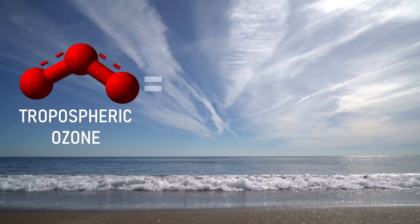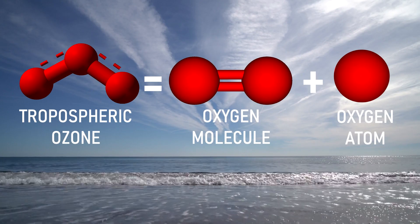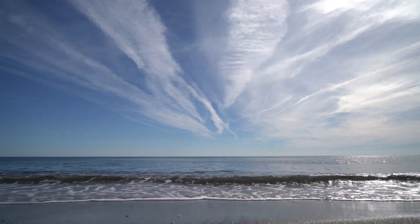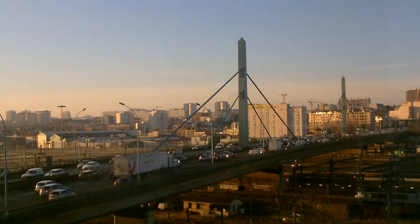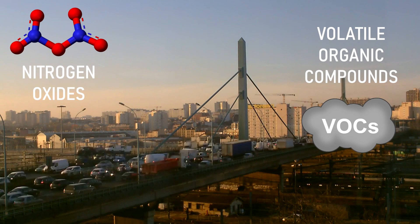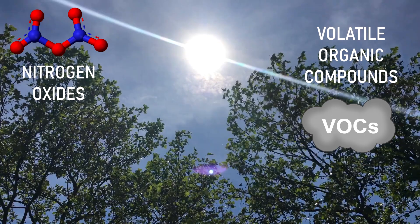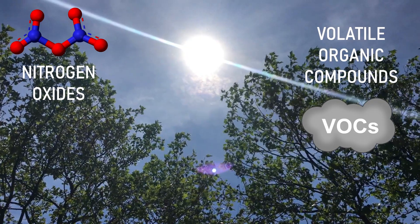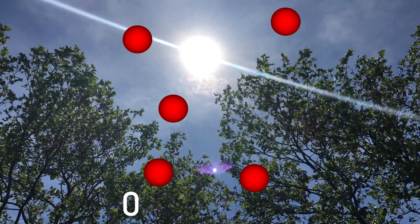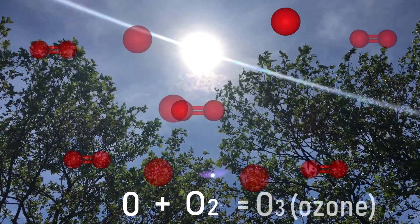Tropospheric ozone is formed by an oxygen molecule and another oxygen atom. The general process by which tropospheric ozone is created is the following: the precursors involved are nitrogen oxides and volatile organic compounds that, when reacting with solar radiation, produce certain complex chemical reactions, releasing oxygen atoms. Finally, the ozone is formed when these oxygen atoms come in contact with an oxygen molecule.